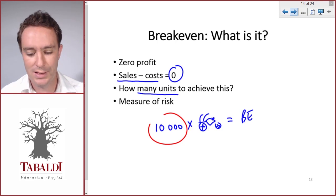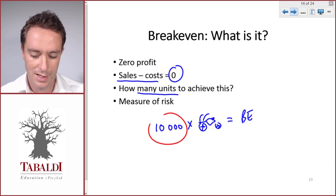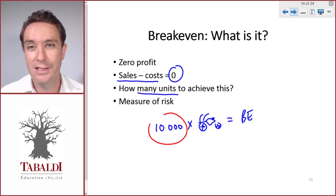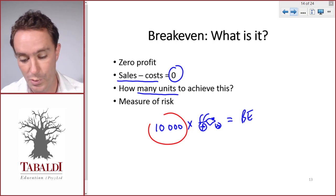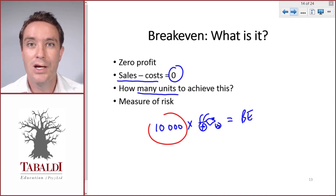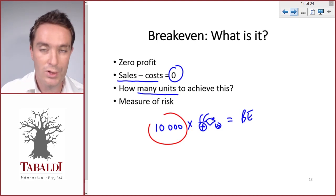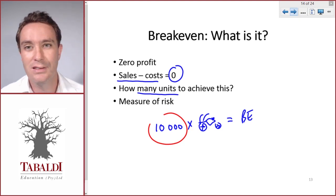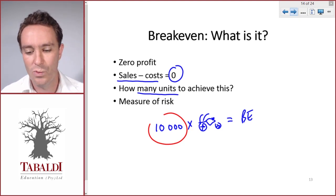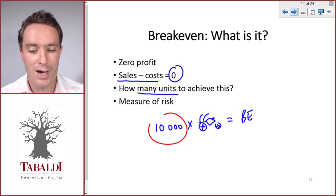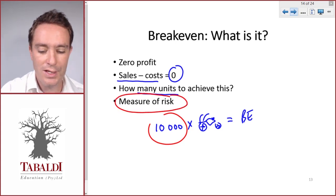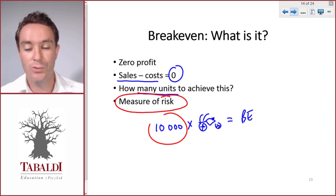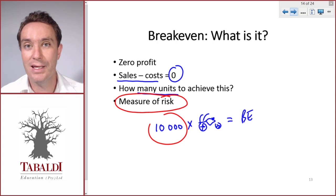It's not just a number — we have to put it in perspective. 10,000 bicycles means, if there are 30 days in a month and we work over weekends, we need to sell more or less 300 bicycles a day. Is this realistic? Where will we find buyers for these bikes?